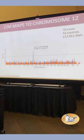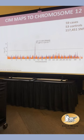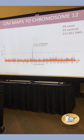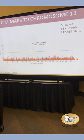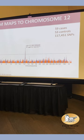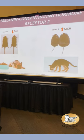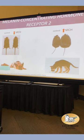We did a GWAS with 59 cases and 53 controls, and found a signal on chromosome 12. This isn't necessarily the only thing causing megaesophagus, but it's the variable factor in the population. We went in and looked at chromosome 12, and found a gene called melanin-concentrating hormone receptor 2. It sounds awful, but it's a receptor for a hormone — a neurotransmitter that comes from the part of the brain controlling reward, food motivation, and appetite.